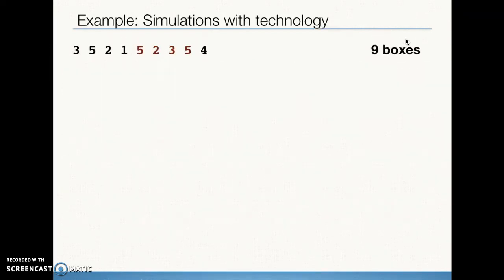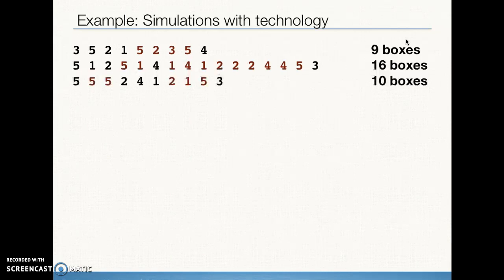So it took, in our first trial, nine boxes or nine random integers for us to get five unique values. In our second trial, it took us 16 boxes. In our third trial, it took 10 boxes. Now this is something that you can try out at home. Just get your calculator out. Remember you go to math, the math button, then prob for probability features, and then randint is one of your options. You want between one and five.